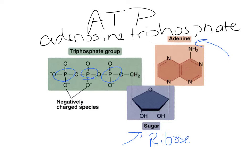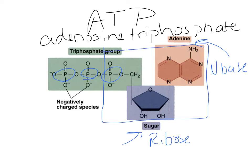Structurally, ATP is similar to a nucleic acid. Adenine is the nitrogen base found in both DNA and RNA. It has the same sugar as RNA — the pentose sugar ribose. Your nucleotides that build nucleic acids only have one phosphate group — the nitrogen base, the sugar, and one phosphate. ATP has two more added on the end.